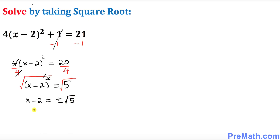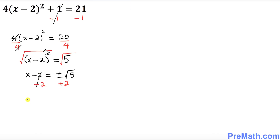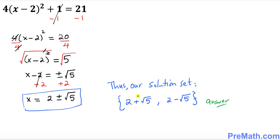Now we isolate x by adding 2 on both sides. So x equals 2 plus or minus square root of 5. That is our solution. Splitting it up, our solution set is 2 plus square root of 5 and 2 minus square root of 5.